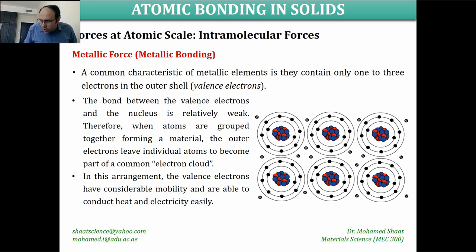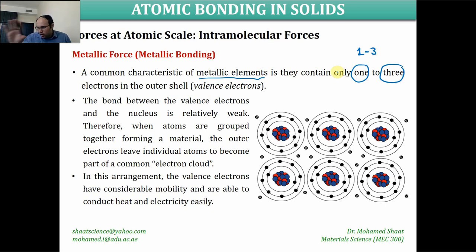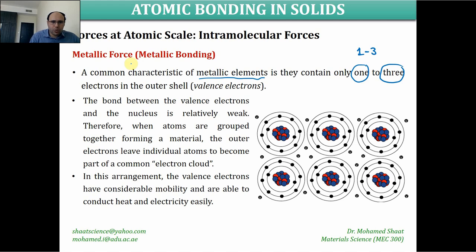The last topic in this video is metallic bonding. A common characteristic of metallic elements is that they have one, two, or three valence electrons at their outermost shell. When we have two metal atoms together, this generates a metallic bond, which is a weaker bonding force compared to covalent or ionic bonds.